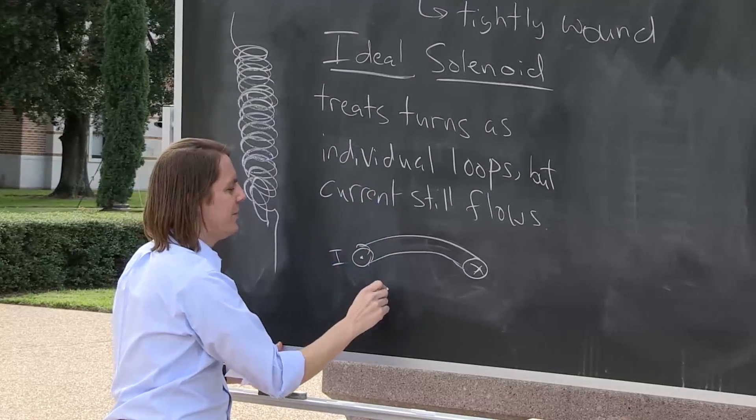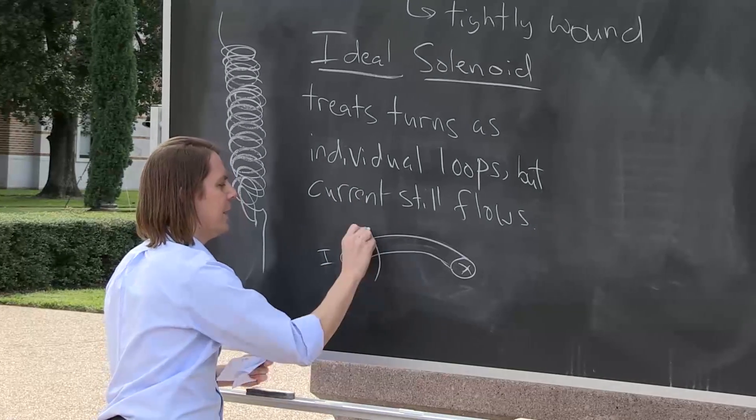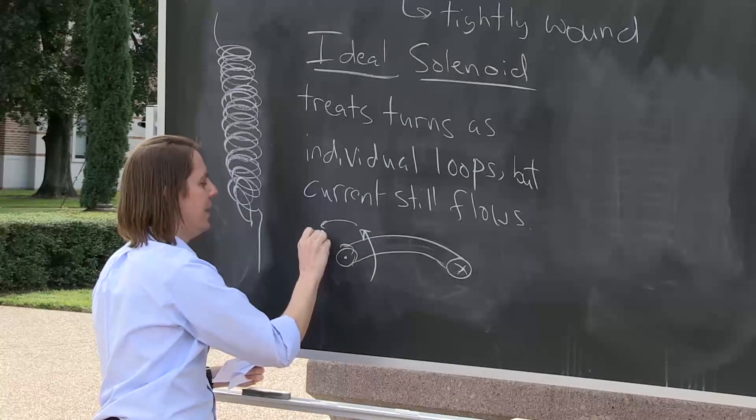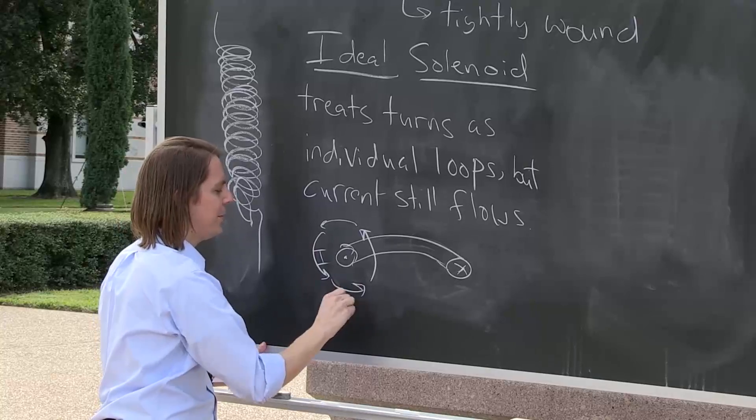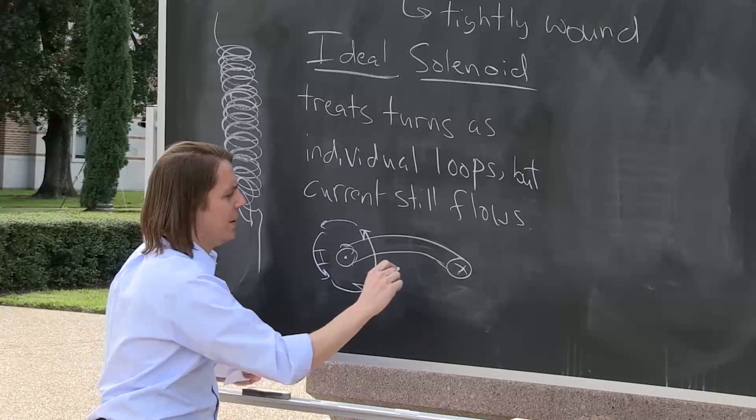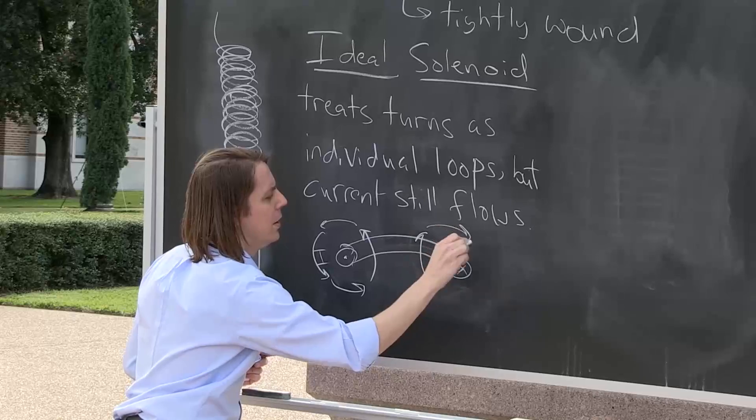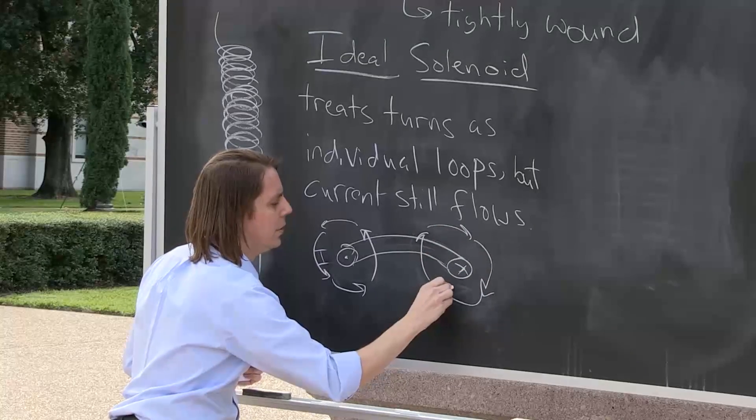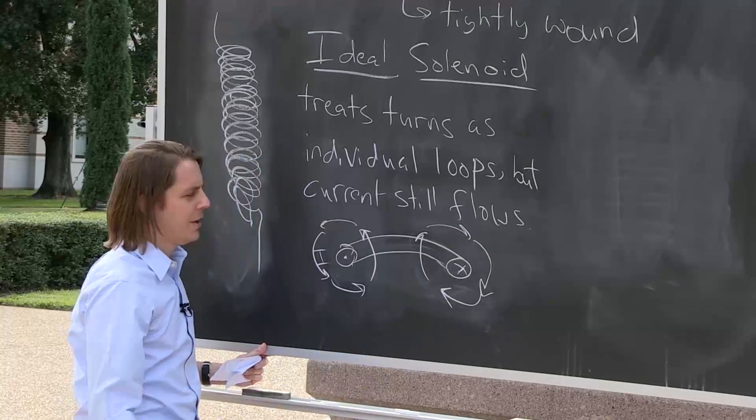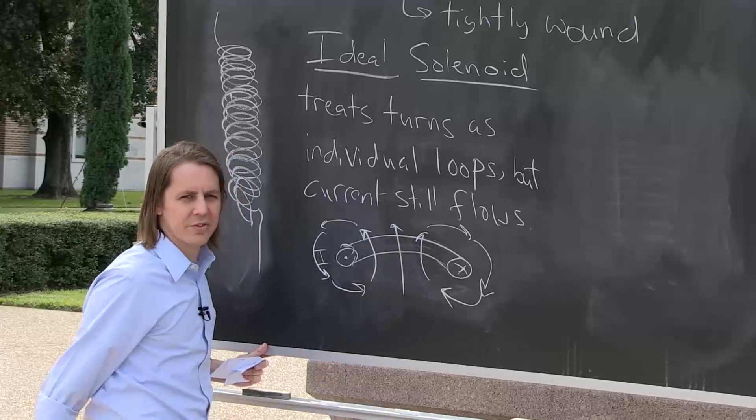If you go off-axis, it kind of does this. We've drawn this many times. And we know everything about the magnetic field is loopy. If you have a current loop, then you get a magnetic field that also makes a loop. And then in the middle, it just sticks up.